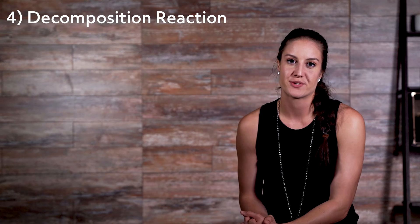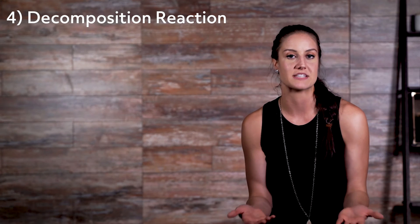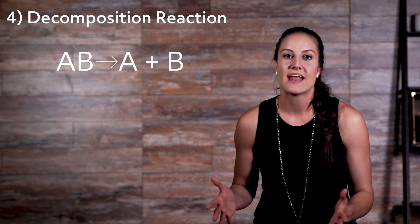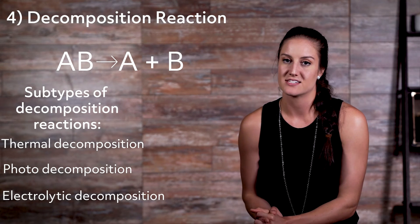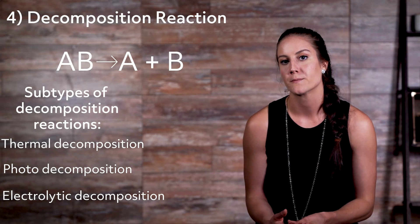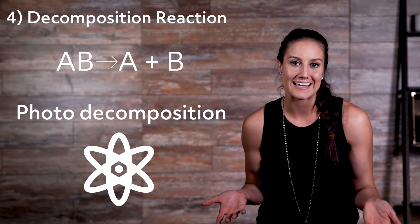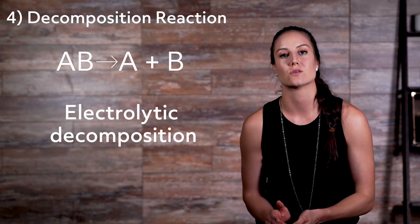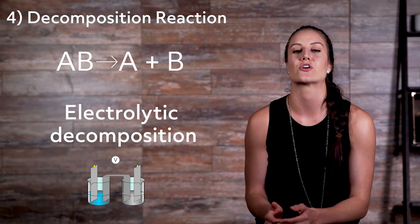Number four: decomposition reaction. Decomposition and composition are opposites. In a decomposition reaction, a single complex compound is broken down, or decomposed, into a more basic substance. The equation is: AB yields A plus B. There are three different subtypes: thermal decomposition, photodecomposition, and electrolytic decomposition. The term that precedes the word decomposition refers to the type of energy used. In thermal decomposition, heat is added to decompose the compound. In photodecomposition, photons or light is added. In electrolytic decomposition, electric current passes through a liquid solution to decompose it — for example, the electrolysis of water, which decomposes into hydrogen and oxygen.